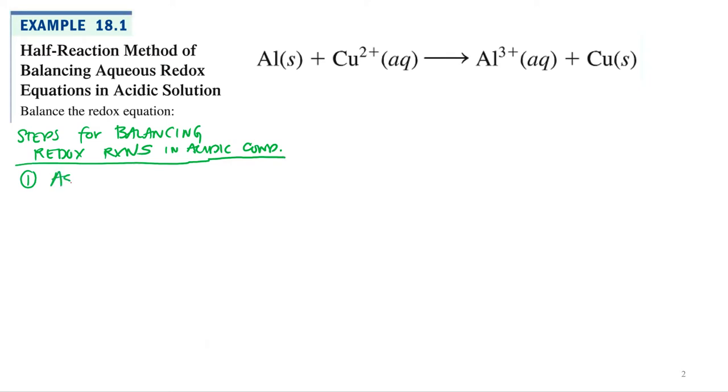The first thing we're going to do is assign oxidation states. Alright, so what's the oxidation state on aluminum solid? Zero. It's a neutral atom, element, zero, has to equal zero. What would be the charge for copper plus two? Plus two. Its oxidation state has to equal this charge, the overall charge. What about aluminum plus three? Plus three. Copper? Zero.